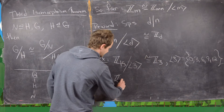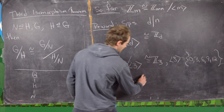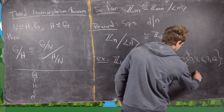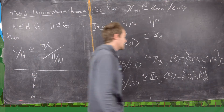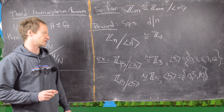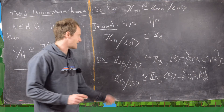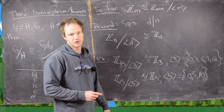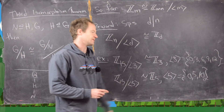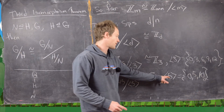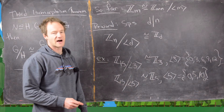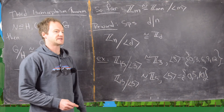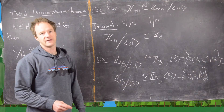We could also do Z_15 mod ⟨5⟩, and that's isomorphic to Z_5. The cyclic subgroup generated by 5 is {0, 5, 10}. Just by the order of the group we can verify: the cyclic subgroup generated by 3 has 5 elements, making the quotient group have 15/5 = 3 elements. A quotient of a cyclic group is cyclic, so we get Z_3. Similarly, the cyclic subgroup generated by 5 has 3 elements, 15/3 = 5, and we get a cyclic group with 5 elements, i.e., Z_5.